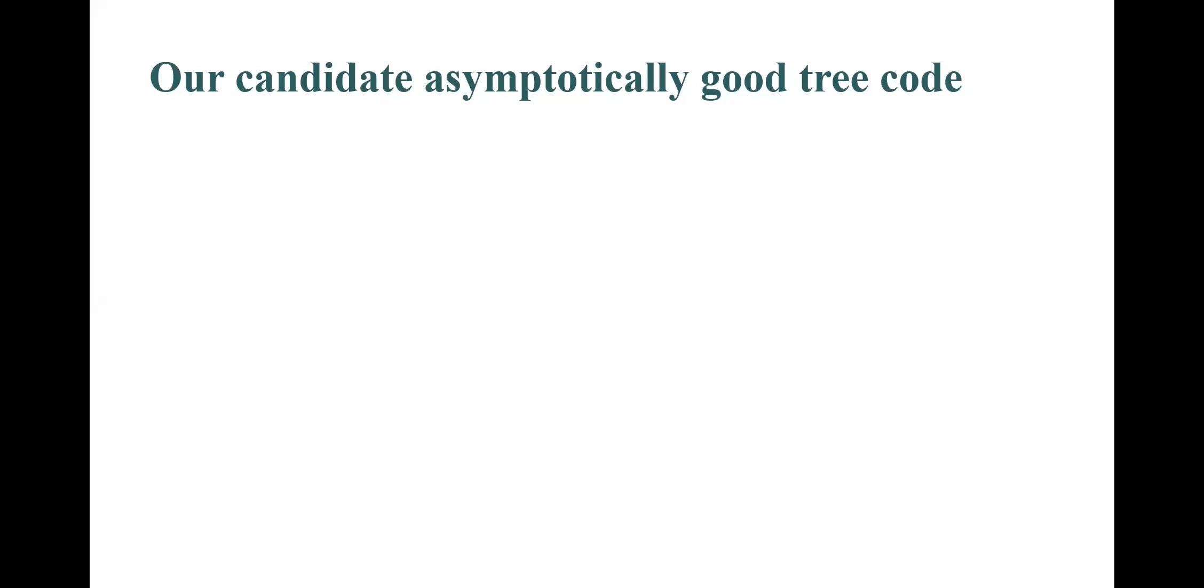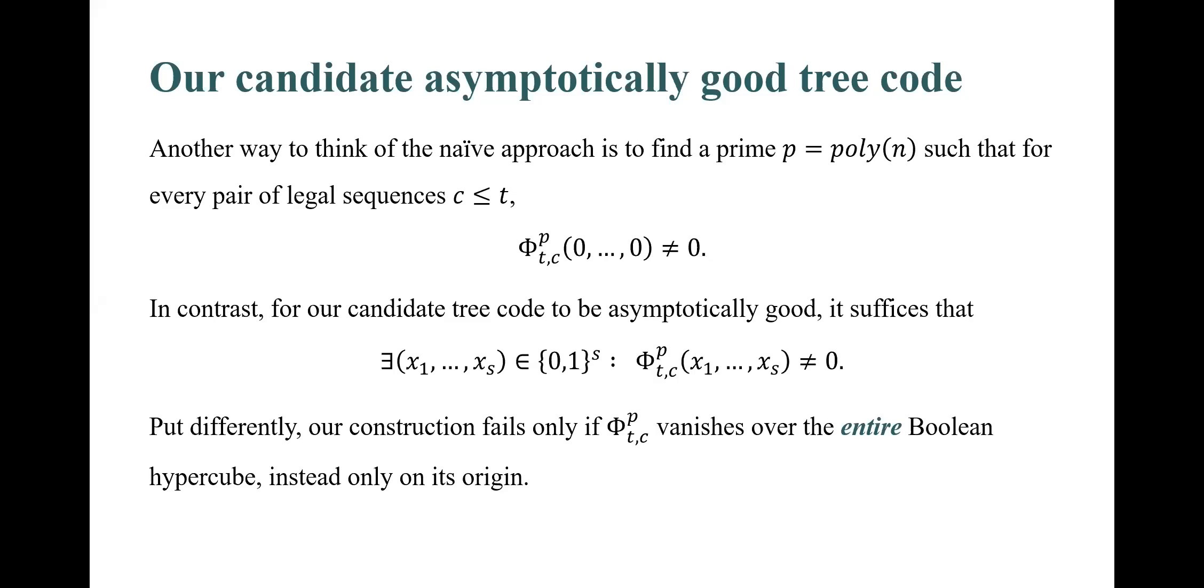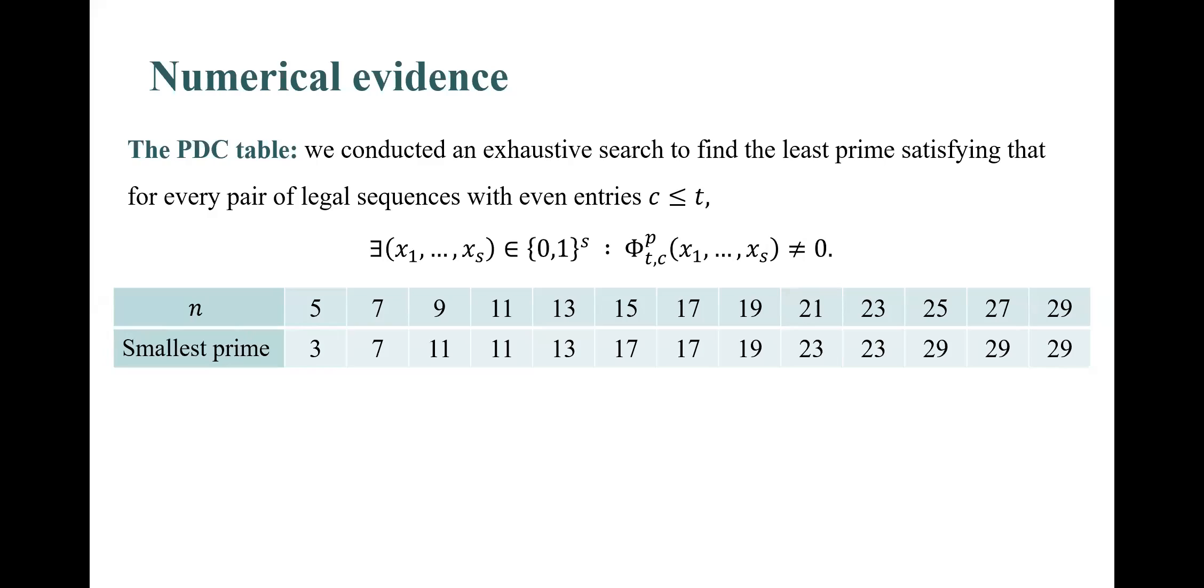To better understand the supporting evidence I'll present next, I will first emphasize the difference between the naive approach we considered earlier and the PDC conjecture. Another way to think of the naive approach for reducing the alphabet size is to find the prime p that is polynomial in n, such that for every pair of legal sequences t,c satisfying that c is smaller or equal to t, F_t_c mod p is not zero when evaluated on the origin. In contrast, to allow our candidate tree code to be asymptotically good, it suffices that there exists some boolean values x_1 to x_s, such that F_t_c mod p, when evaluated on x_1 to x_s, is not zero. Put differently, our construction fails only if F_t_c mod p vanishes over the entire boolean hypercube, instead only on its origin.